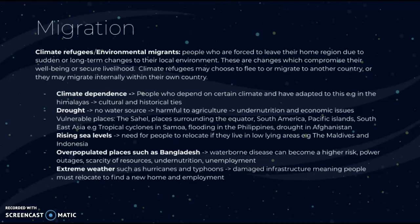Key factors include climate dependence — people who depend on certain climates and have adapted to them, with strong cultural and historical ties to an area, can be greatly impacted by climate change. Drought can lead to a lack of water sources, harming agriculture and leading to undernutrition and economic issues. Vulnerable places include the Sahel, areas surrounding the equator, South America, the Pacific Islands, and Southeast Asia, where tropical cyclones, flooding in the Philippines, and drought in Afghanistan have occurred.